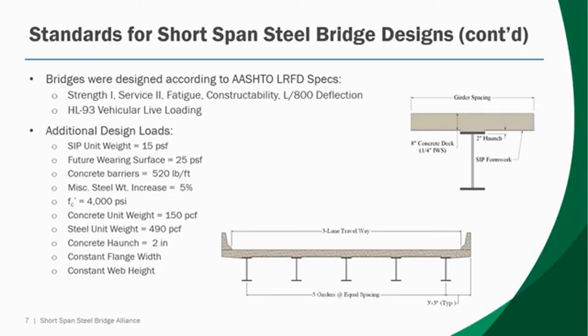We also assumed a two-inch haunch, as seen in the image on the top right, as well as a constant flange width and a constant web height — in line with economic fabrication practices for short-span steel bridges. Each of the girders were designed according to AASHTO LRFD specifications. Strength 1, Service 2, fatigue, and constructability limit states were all assessed, as well as the L/800 live load deflection limit. HL-93 vehicular live loading was used throughout the design process.